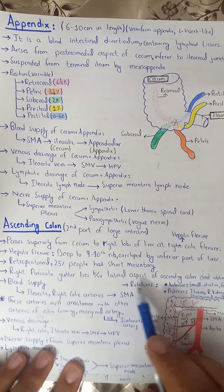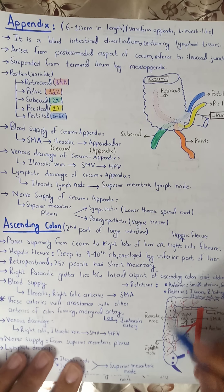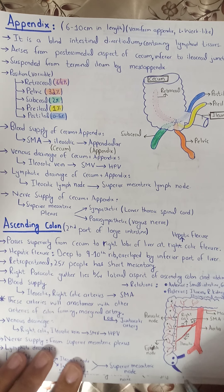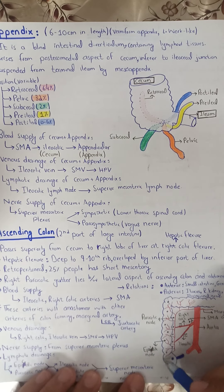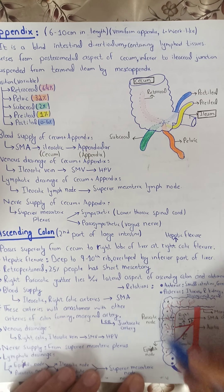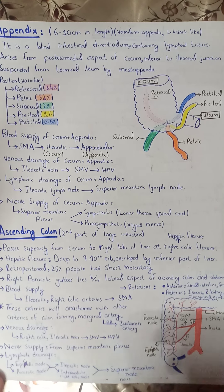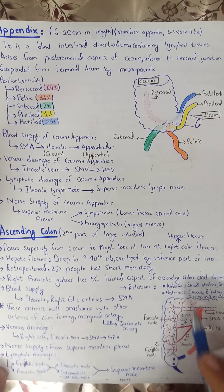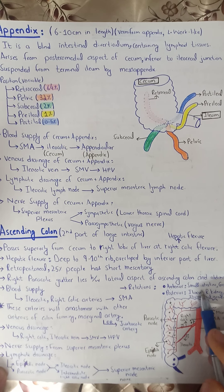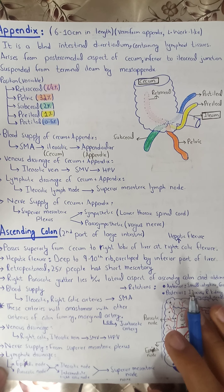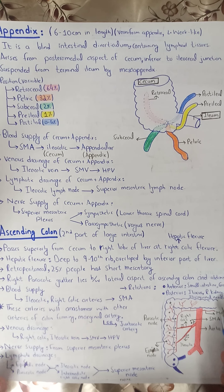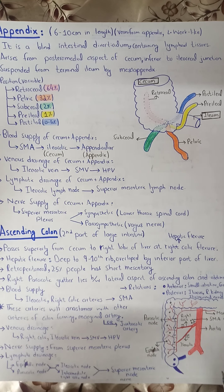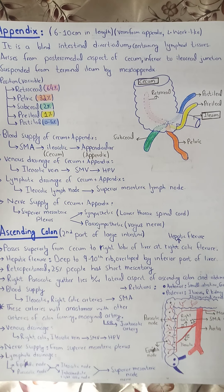The ascending colon is also retroperitoneal, but in 25% of cases it may have a small mesentery. The right paracolic gutter lies between the lateral aspect of the ascending colon and the abdominal wall. Anteriorly, relations include the small intestine, greater omentum, and anterior abdominal wall. Posteriorly are the iliacus muscle, right kidney, and the iliohypogastric nerve — it is best to remember these from an atlas diagram.